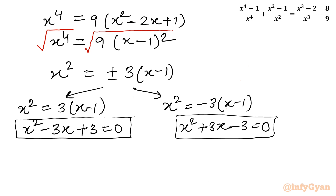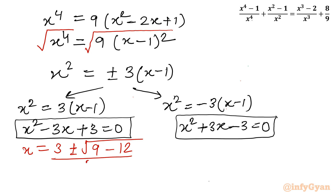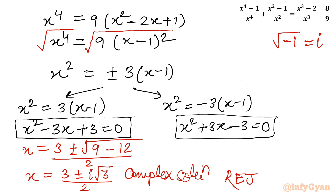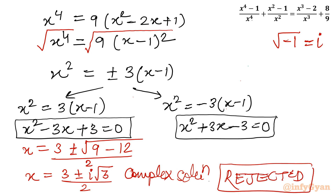For the first equation x² minus 3x + 3 = 0, applying the quadratic formula gives x = (3 ± √(9 minus 12)) over 2 = (3 ± √(minus 3)) over 2 = (3 ± i√3) over 2. The solutions are complex, so we reject them since we require real solutions.